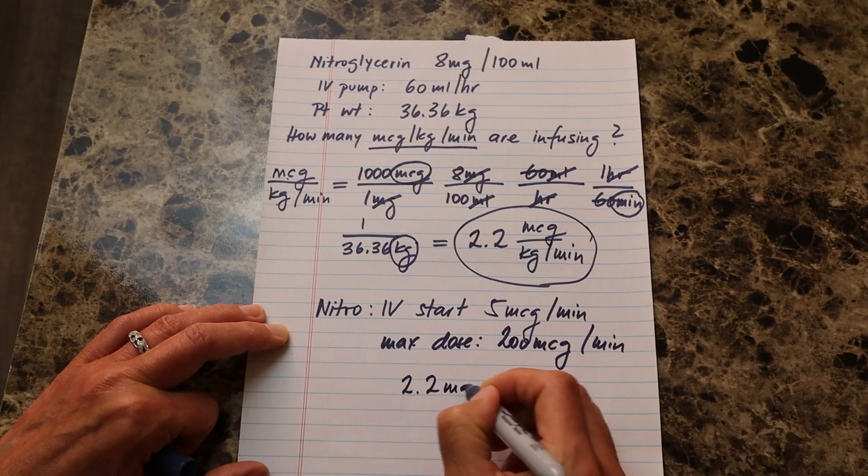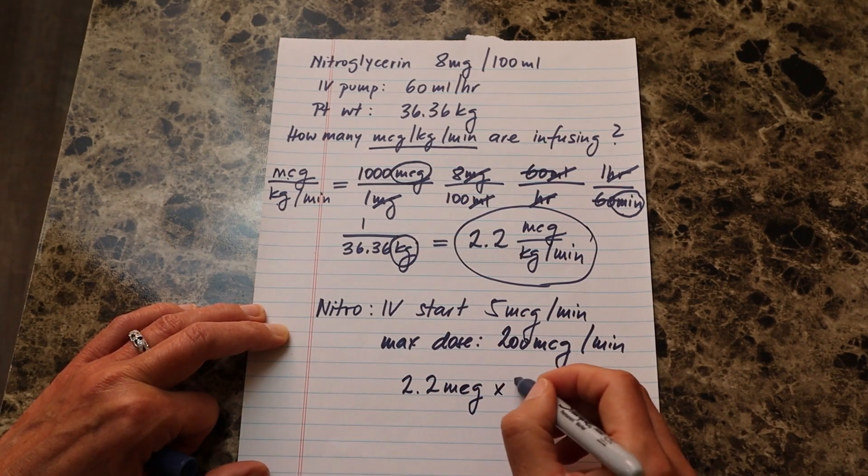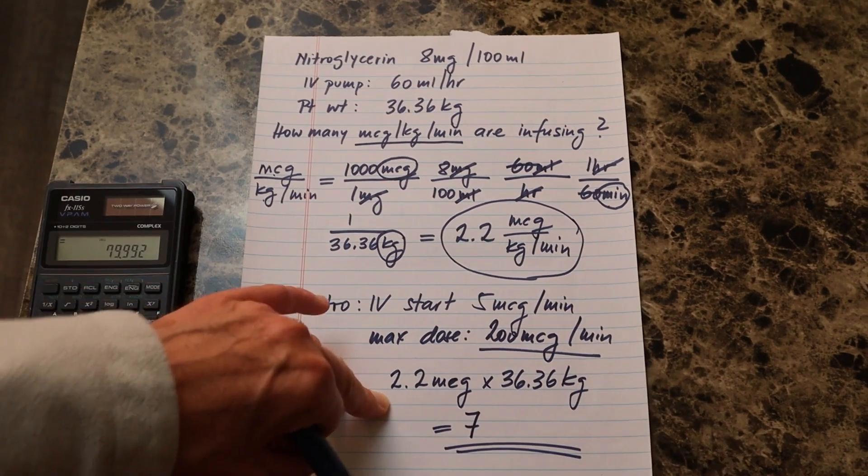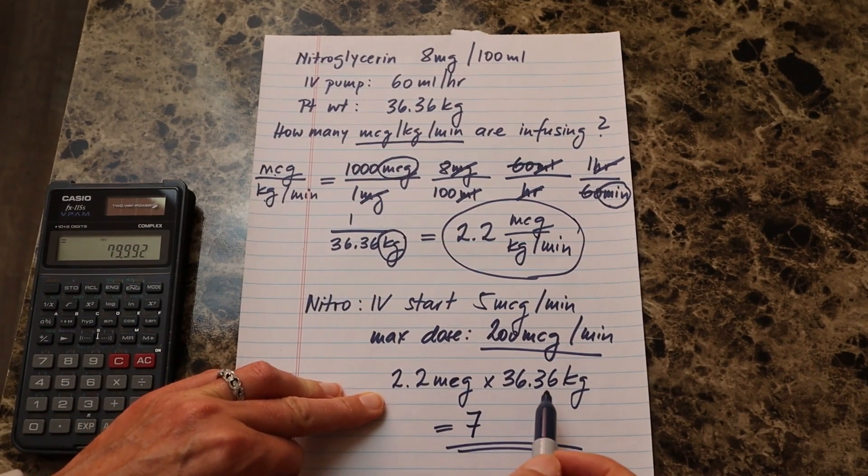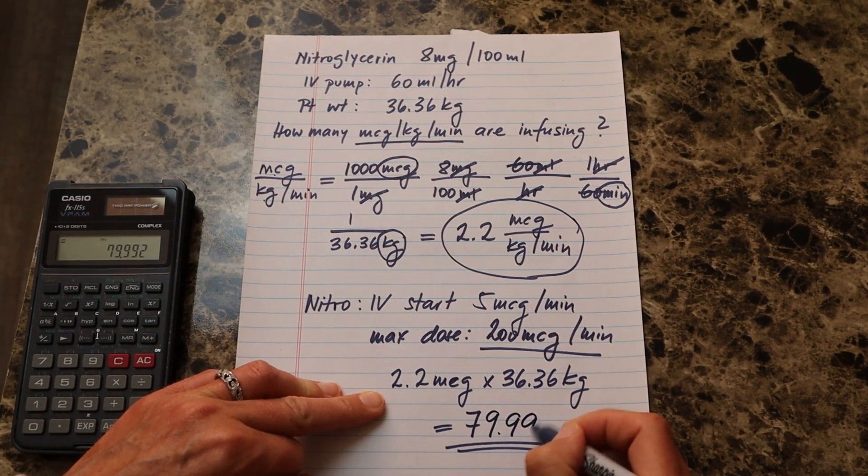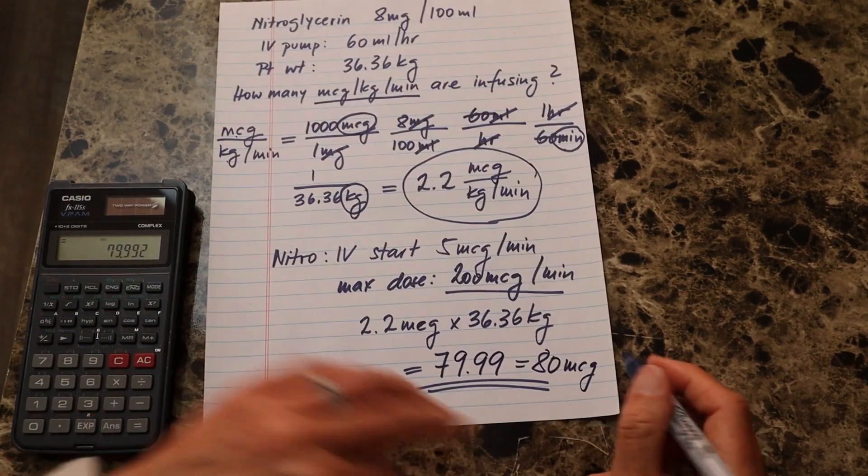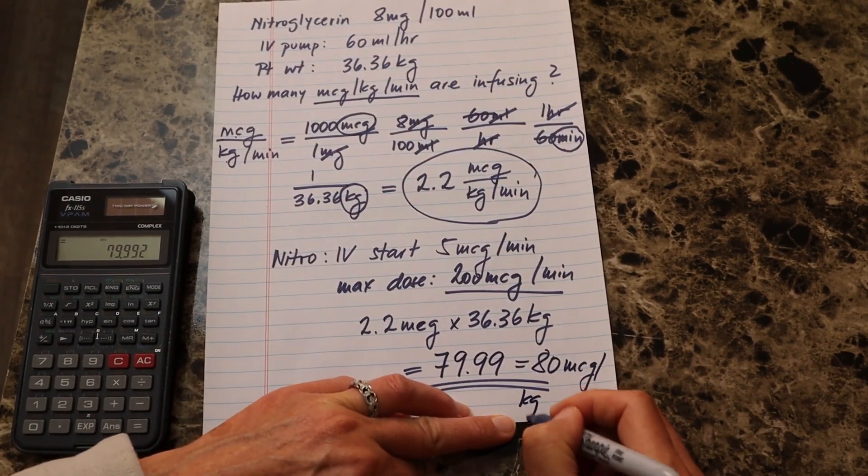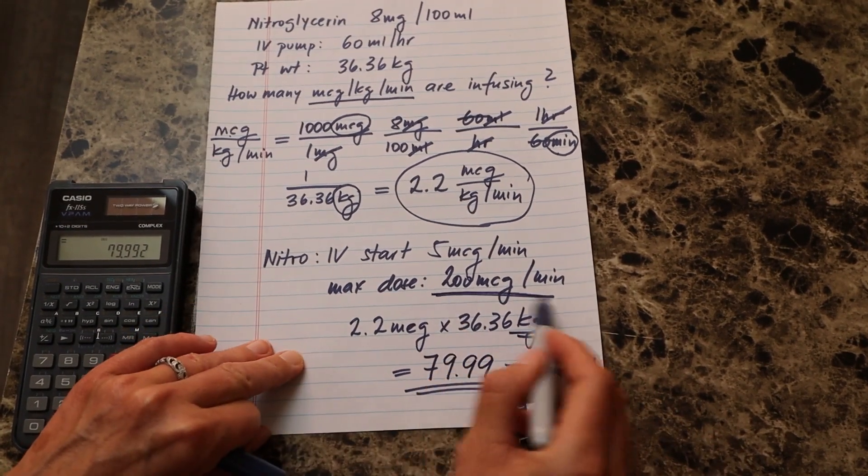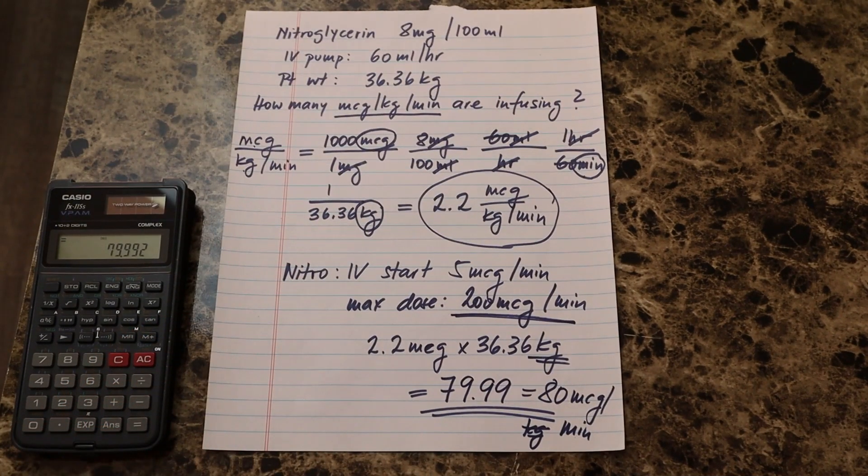So now even if I would multiply this here, so the 2.2 micrograms per kilo. So the patient weighs 36.36 kilos. So doing the math here, 2.2 by 36.36 comes out to 79.99. So really 80 micrograms per kilo. No, per minute, because we've already put the kilos in there. And this is still less than the max dose of 200 micrograms per minute. So I'm good to go with this nitroglycerin.